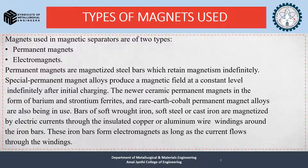Bars of soft wrought iron, soft steel, or cast iron are magnetized by electric currents through insulated copper or aluminium wire windings around the iron bars. These iron bars form electromagnets as long as the current flows through the windings.